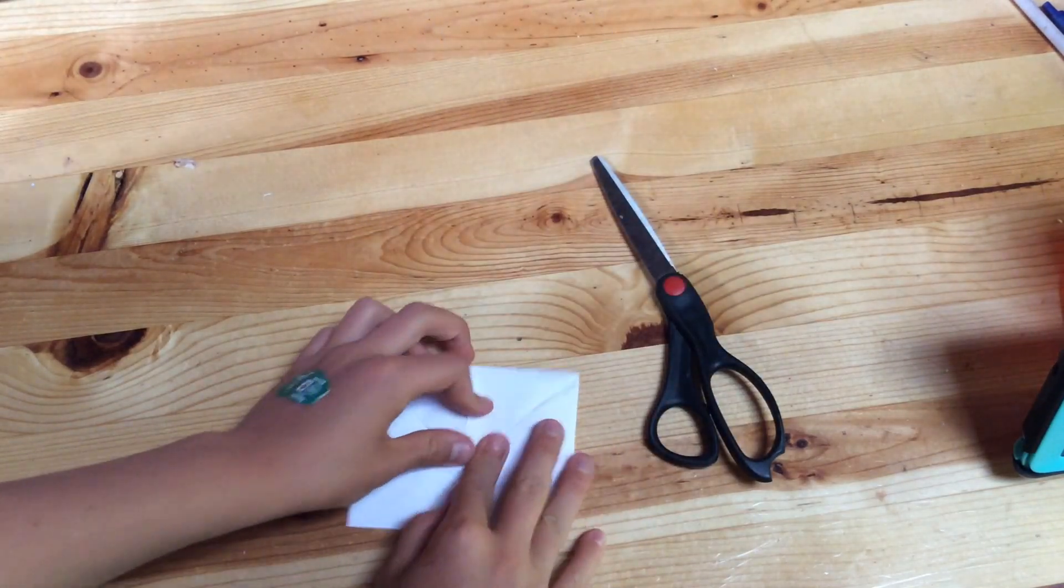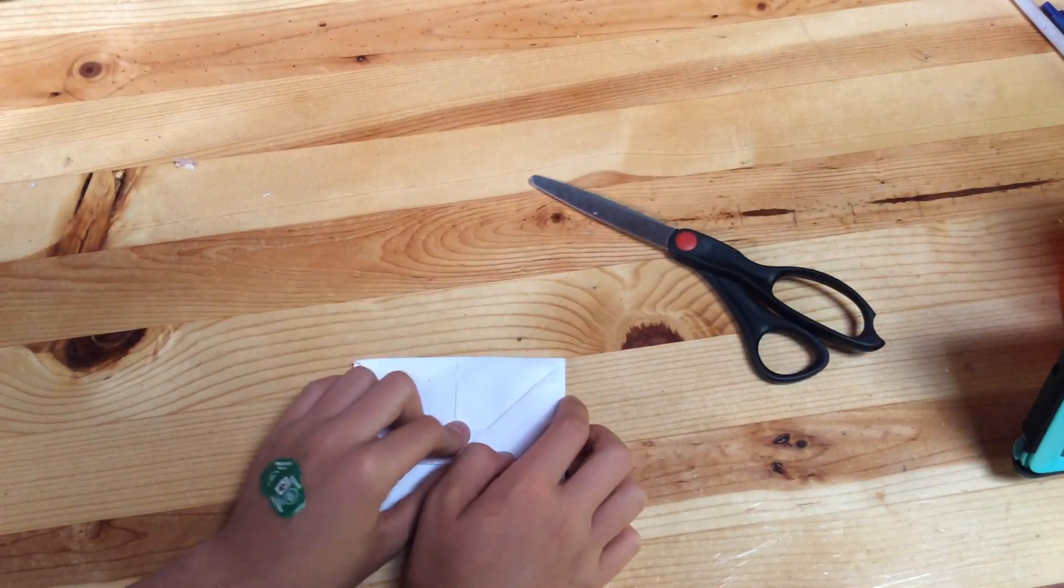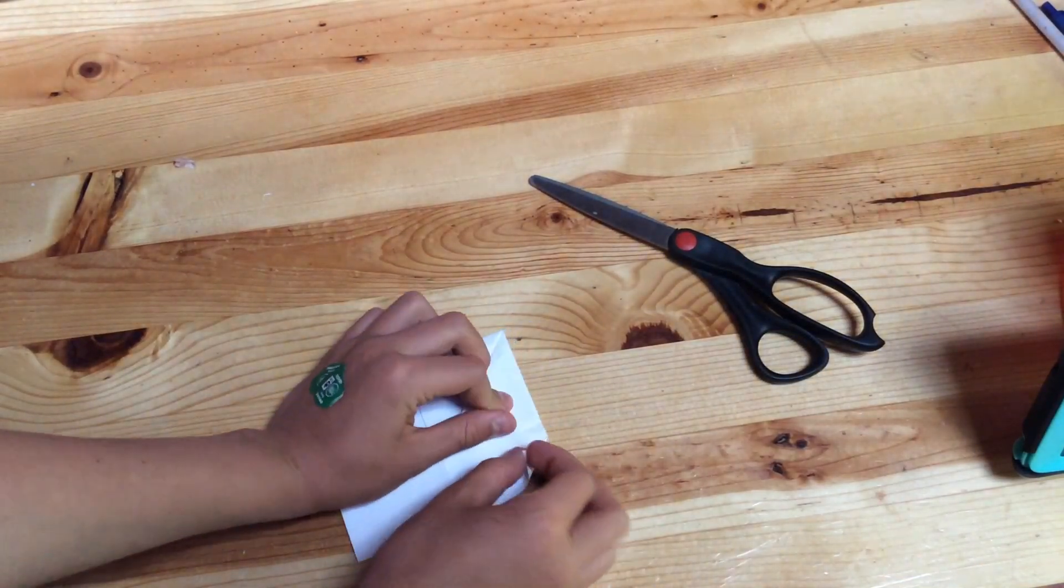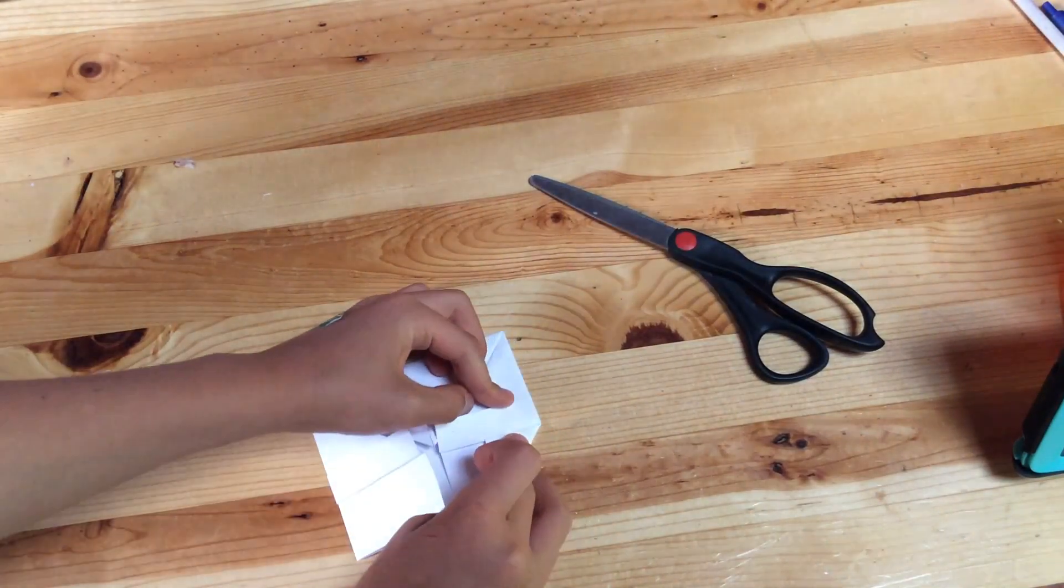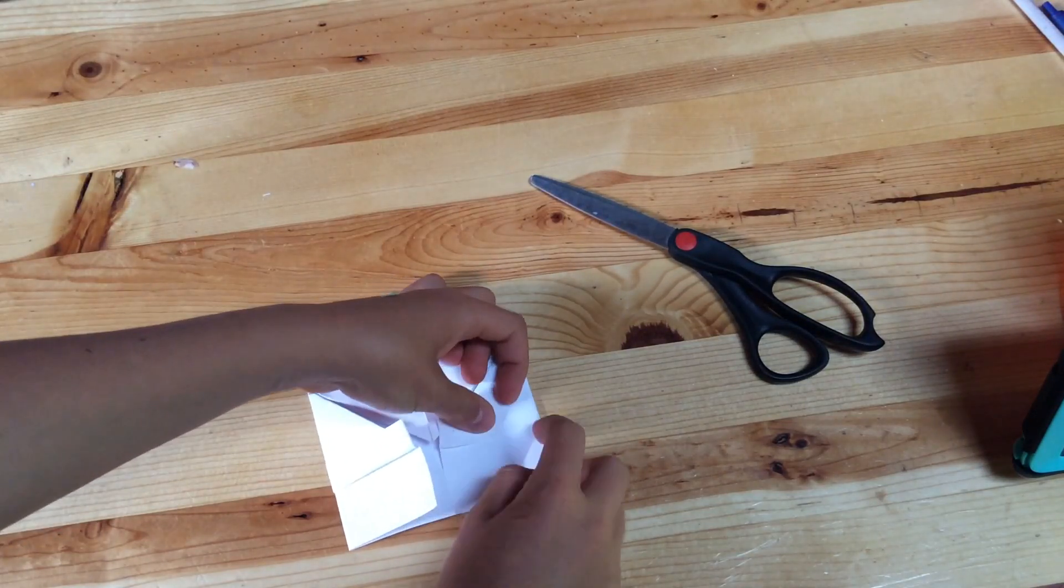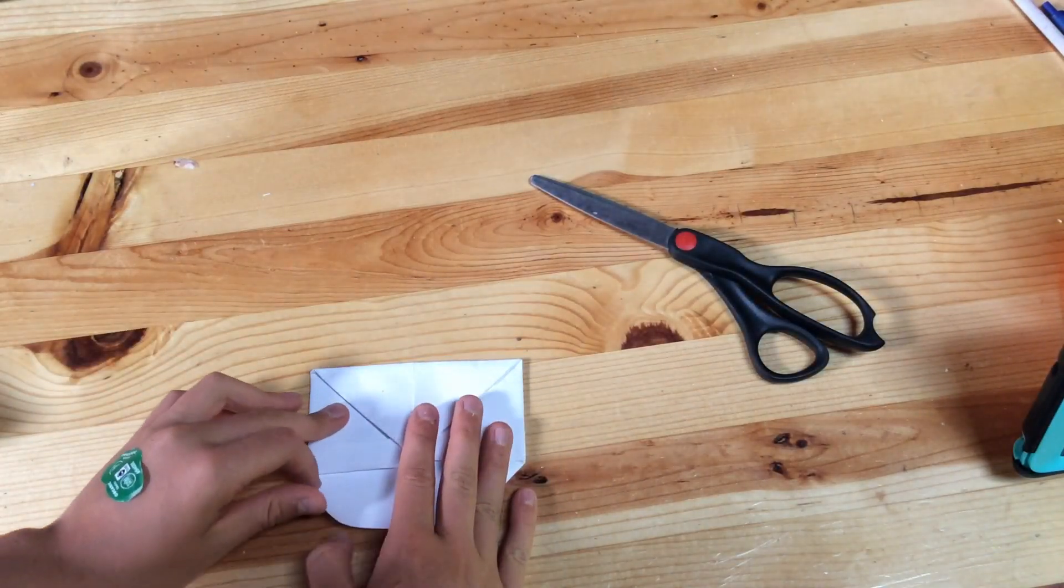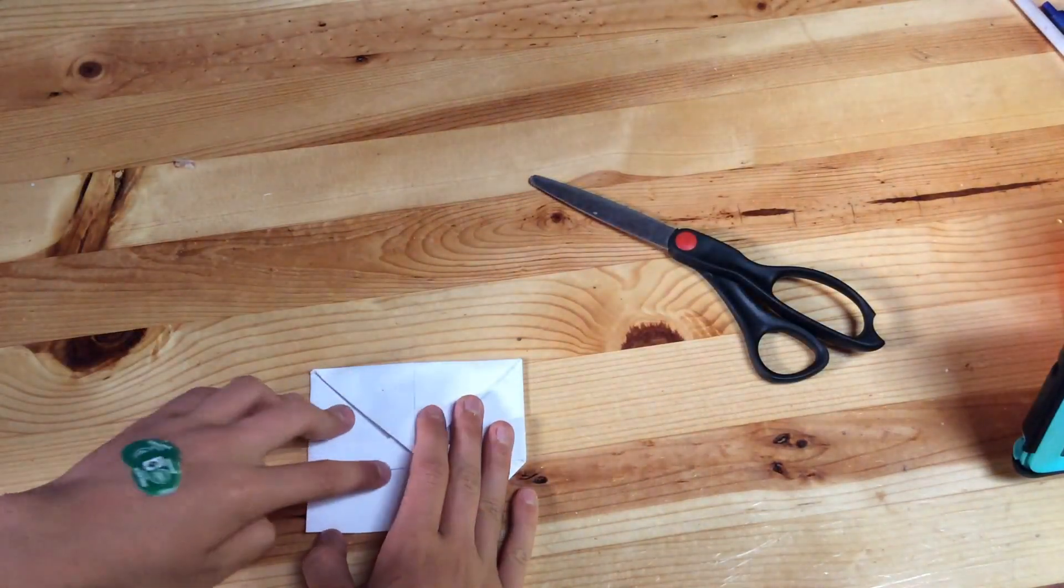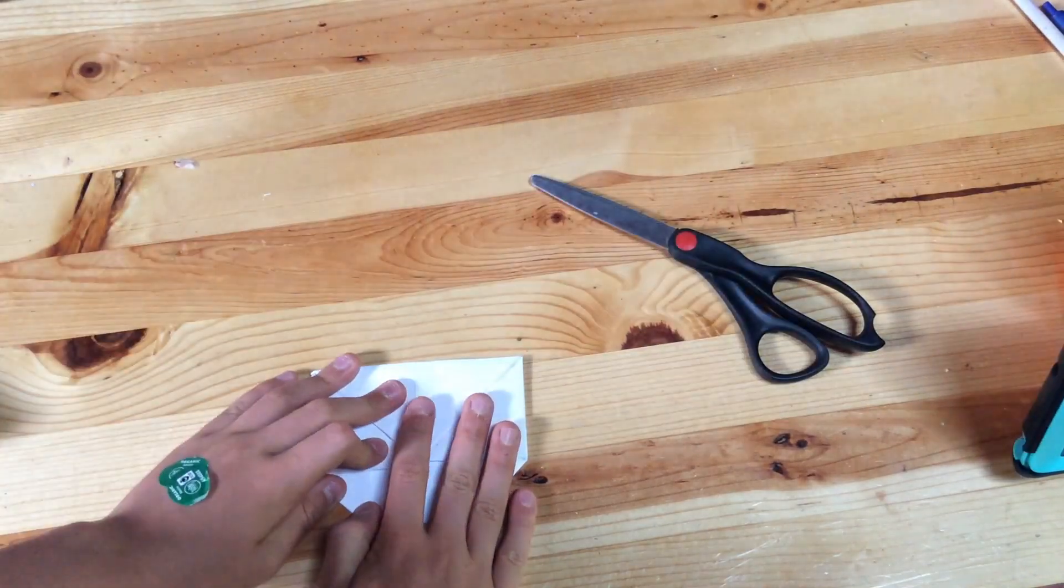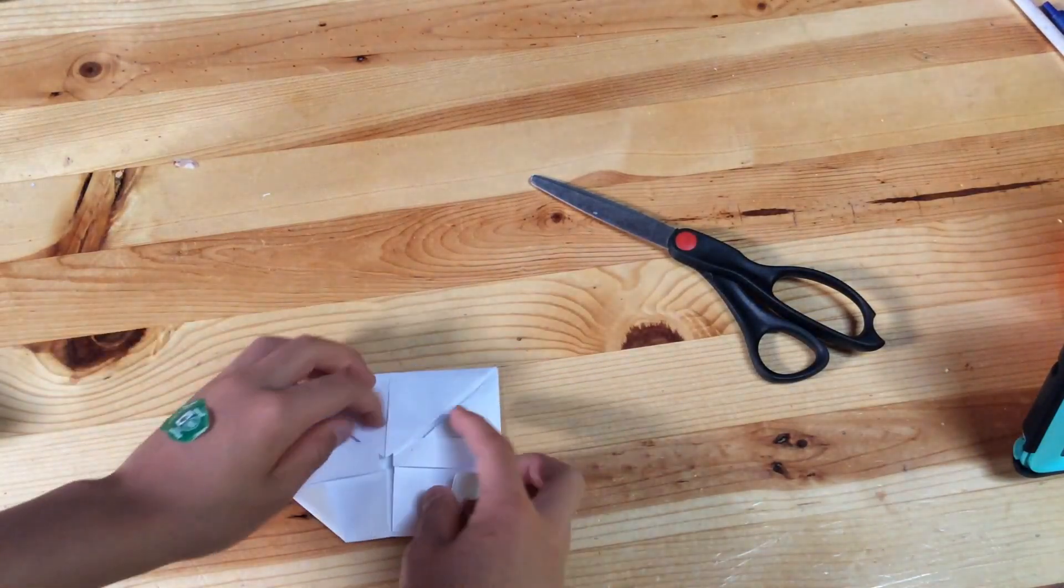So now you have this and now what you do is you fold this corner to there, so then this side is along that same as the other one. So this side is along that. So now this is how it looks like.